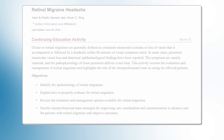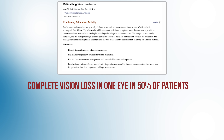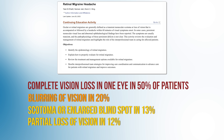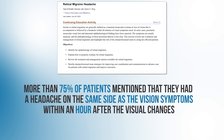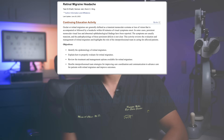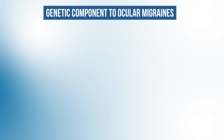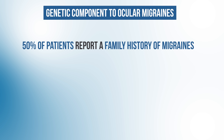Let's discuss ocular migraines first. One study reviewed the most common symptoms: complete vision loss in one eye in 50% of patients, blurring of vision in 20%, a scotoma or enlarged blind spot in 13%, partial loss of vision in 12%, and dimming in 7%. More than 75% of patients reported a headache on the same side as the vision symptoms within an hour after the visual changes. Most of the time, these visual symptoms last in the range of 5 to 40 minutes. There also seems to be a genetic component, as 50% of patients report a family history of migraines.